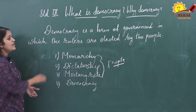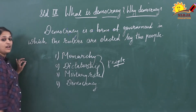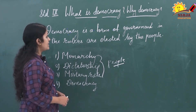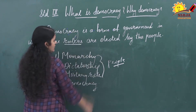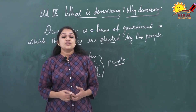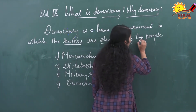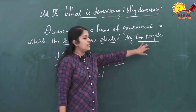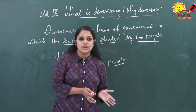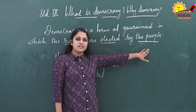So you can see the definition: democracy is a form of government in which the rulers are elected by the people. Now by seeing this definition, several questions arise in our mind. Who is the ruler in this definition? If rulers are elected, what kind of election constitutes a democratic election? And who are the people who can elect the ruler or be elected as a ruler?